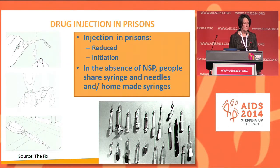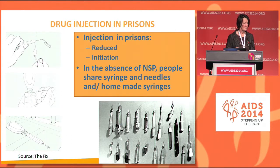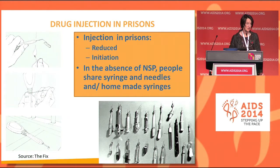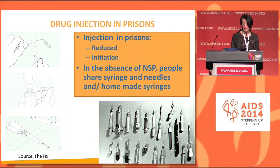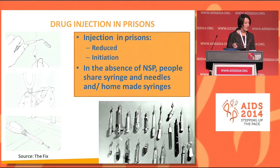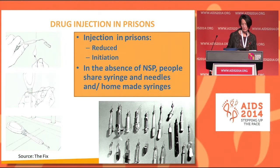Most of them will — or many — will reduce the injection. Some will continue as before, depending very much on the availability of drugs. And some will initiate injecting in prison. In most places, there is no needle and syringe program. They have no access to needle and syringe programs. So people either have one syringe and will share it among five, six, seven, ten people. There is a market for new syringes, a market for used syringes, and also homemade syringes.